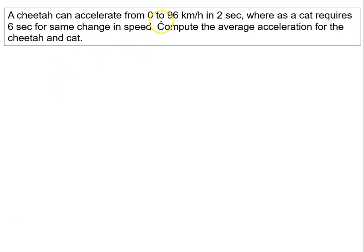A cheetah can accelerate from 0 to 96 km per hour in 2 seconds. This is for the cheetah. Initial speed is given as 0 km per hour. Final speed, that is V, is 96 km per hour and time taken is given as 2 seconds.